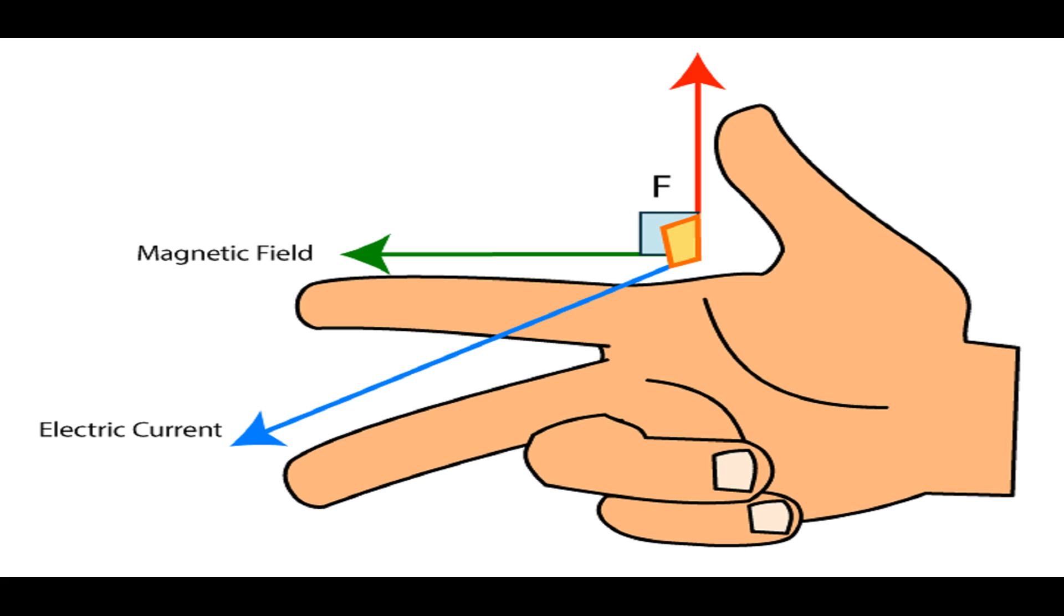The current in the wire can have two possible directions. Fleming's right-hand rule gives which direction the current flows.